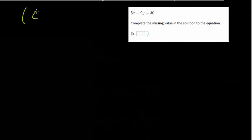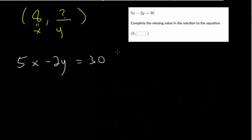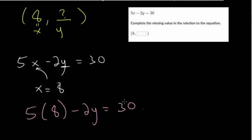But the strategy is going to be the same. Notice we're given the coordinate pair 8 comma blank. Where we know the x value, but we don't know what y is equal to. That's our mystery. And we're also given this equation 5x minus 2y is 30. And we need to find the missing value in the solution. So we need to find that y value. But we know that x is equal to 8. So we can plug that in anywhere we see an x and then just simplify. So you get 5 times 8 minus 2y equals 30. And now we have an equation where we just have y. So we can solve for that.